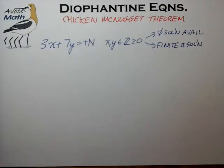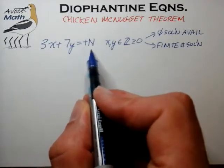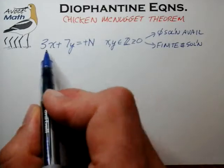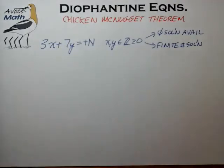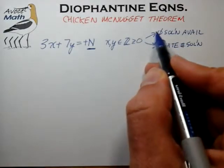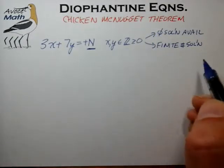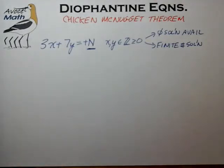Normally in Diophantine problems at the AMC level, we're given a fixed n value on the right side of this equation and we're typically asked to solve for the discrete values of x and y that satisfy the constraint. But we'd like to turn that question on its head and ask: what values of n lead to no solutions, and what values of n lead to a finite number of solutions, and how can we describe that set of n more concisely?